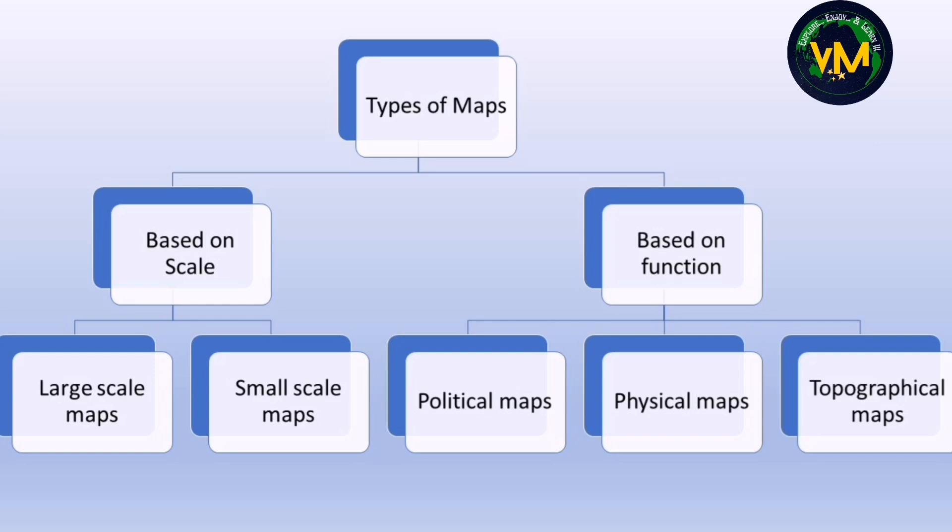Maps can be classified as large scale maps or small scale maps. To understand this better, let's play a game — big fish, small fish. When I say big fish, you show a big hand gesture; when I say small fish, you show a small gesture. You have to do exactly the opposite of what I say. This is a fun game often played at parties.